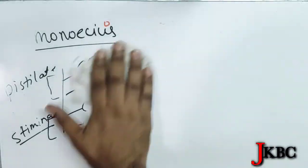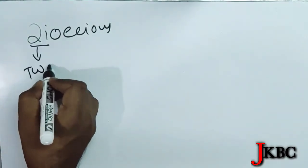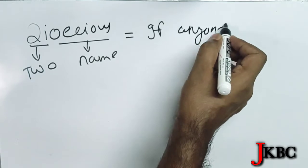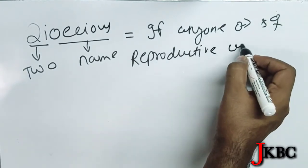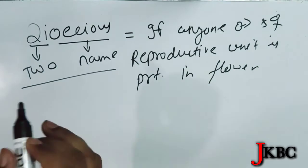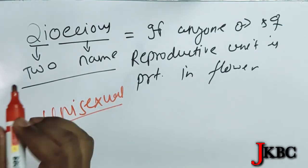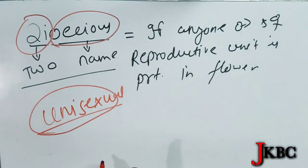Now another topic is dioecious. 'Di' means two, 'ecious' means individual. In dioecious plants, the male and female reproductive units are present on separate individuals — one plant bears only staminate flowers and another bears only pistillate flowers. This is called dioecious. Another related term is unisexual — two individuals each have a single sex organ. This is called dioecious and unisexual. The definition is different but the meaning is the same.